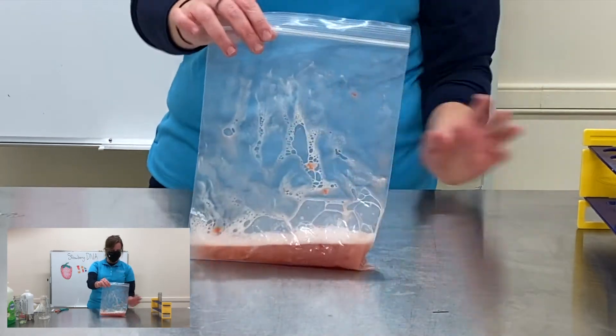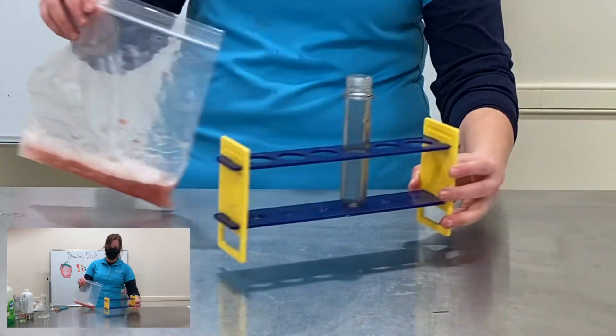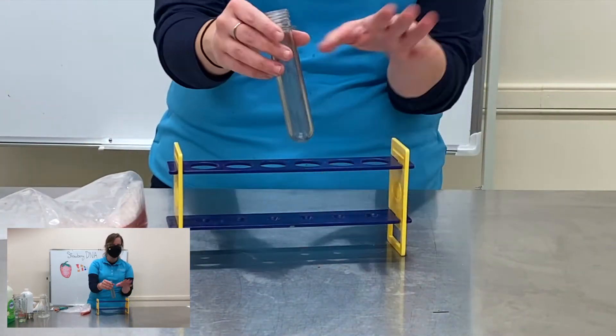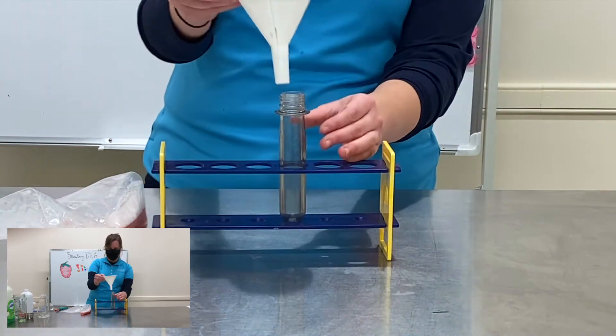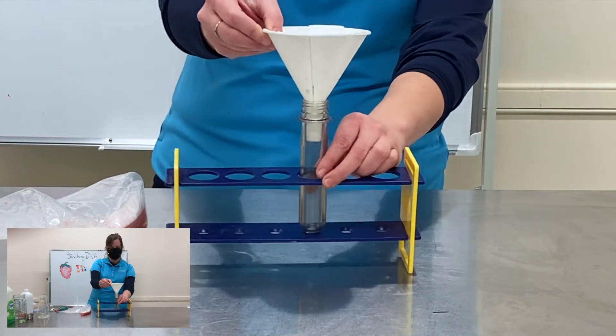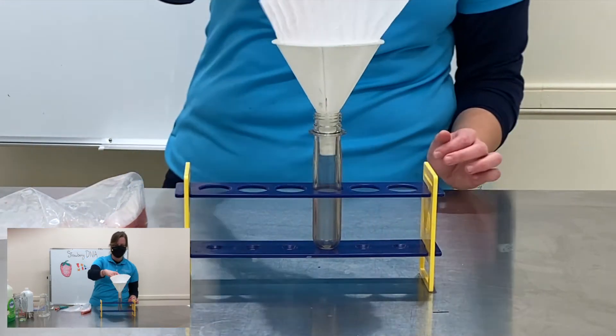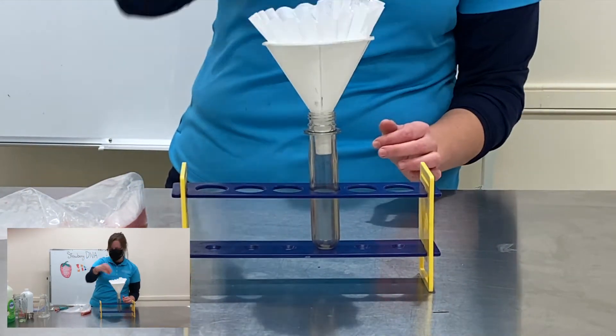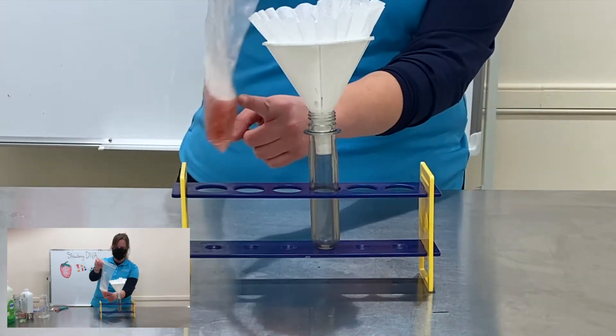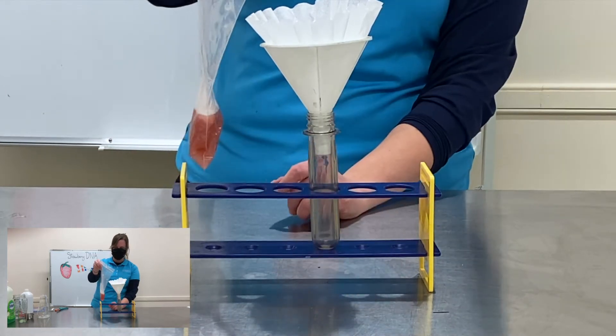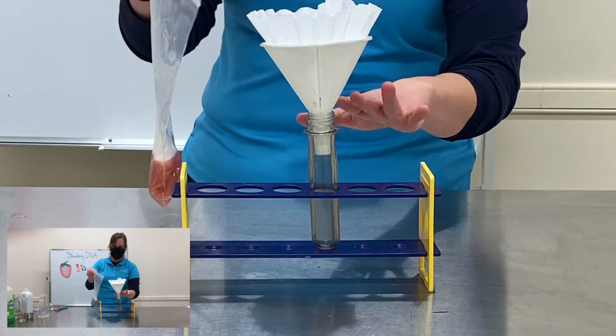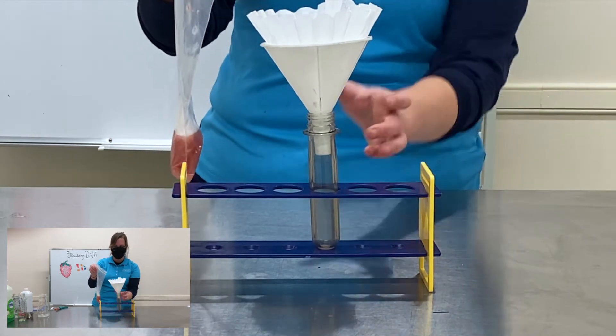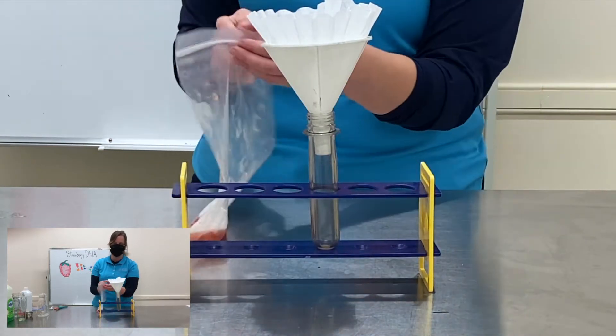So now I've mixed it all together I'm gonna pull out that test tube I had. Again if you have a small cup instead that's okay. I'm gonna grab my funnel and put it on top of the test tube. And then my coffee filter goes inside. This is just going to ensure that any liquid in the bag goes into the test tube and any of those strawberry chunks stay up here in the coffee filter. If you don't have a funnel or a coffee filter you can just carefully arrange a paper towel. It will do the same thing.